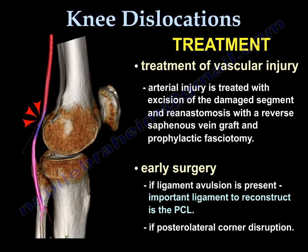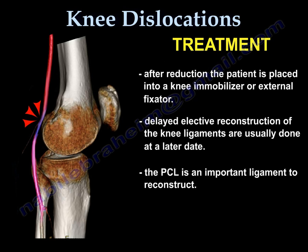Early surgery for knee dislocation is usually indicated if there are ligament avulsions. An important ligament to reconstruct is the PCL — if there is an avulsion, this is done very early. Posterolateral corner disruption also necessitates early surgery. After reduction, the patient is placed into a knee immobilizer or external fixator. Delayed elective reconstruction of the knee ligaments is usually done at a later date, with the PCL being an important ligament to reconstruct.